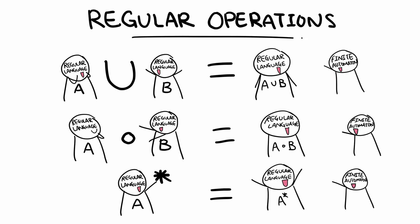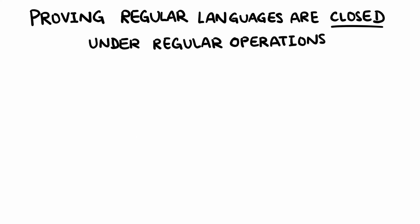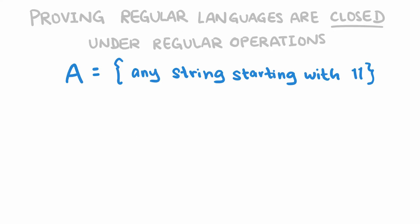We won't be going through the formal proof in this video, but here is the idea. Let's say A is the language containing any string that starts with, and B is the language containing any string that ends in. A and B are both regular languages, since we can construct finite automata for them.